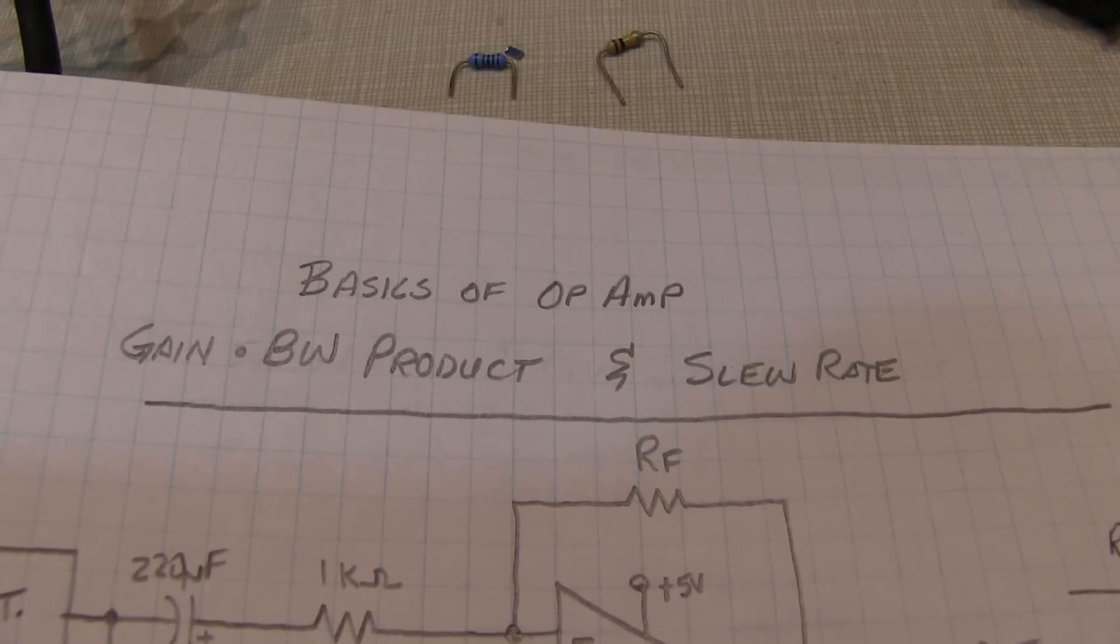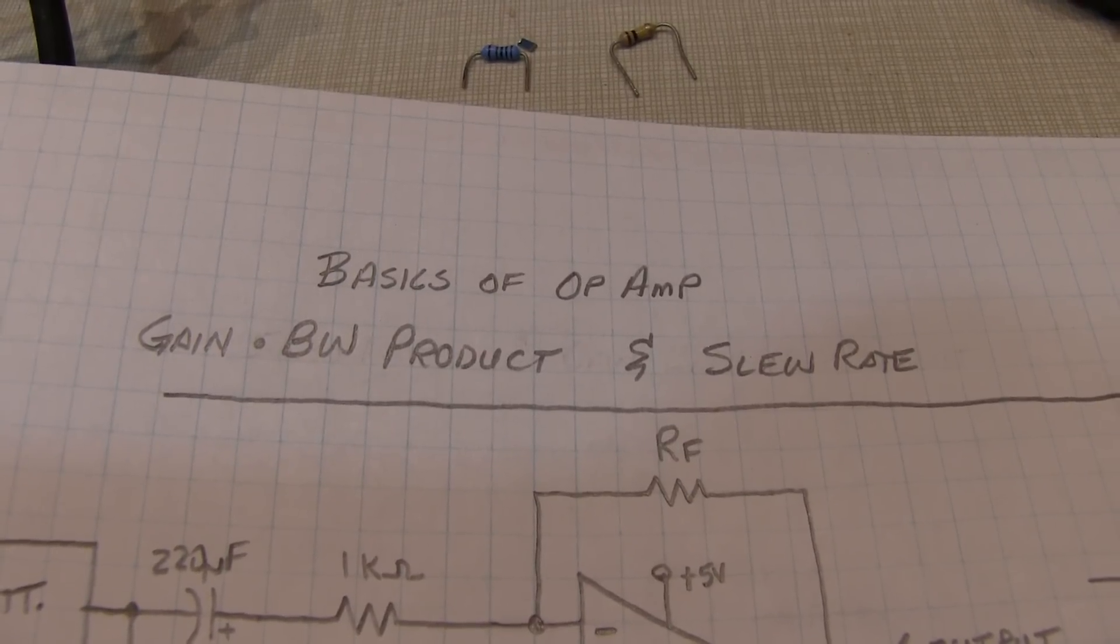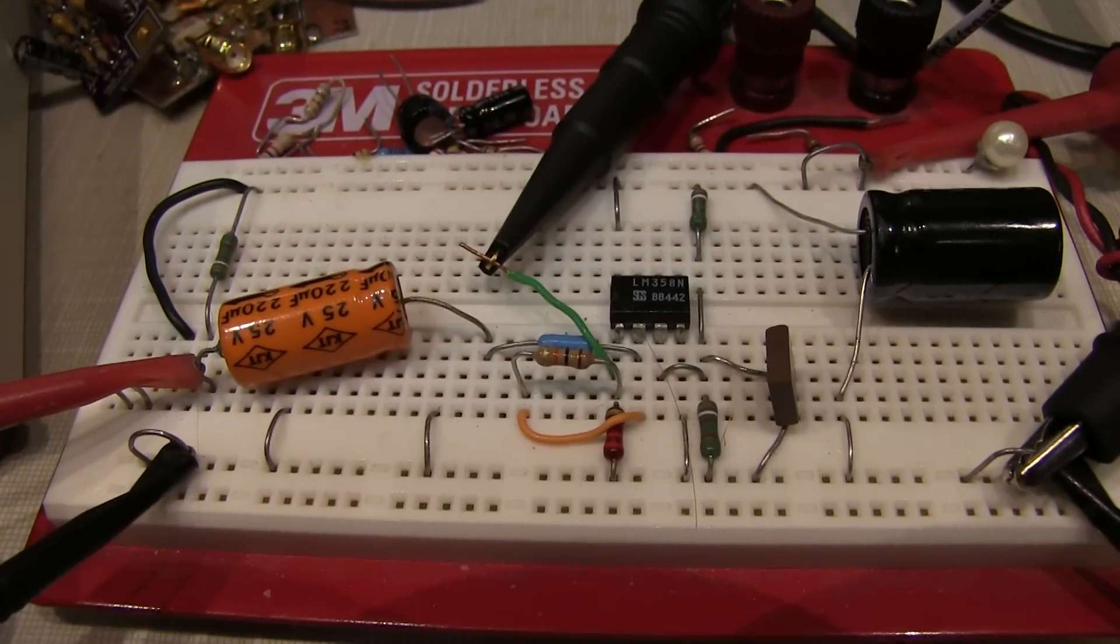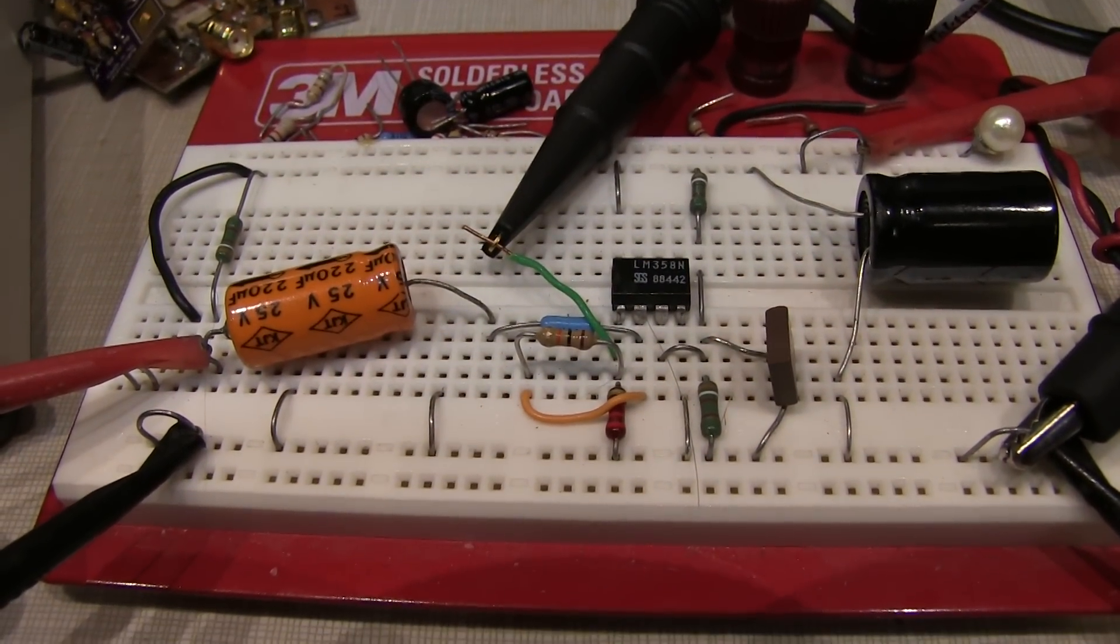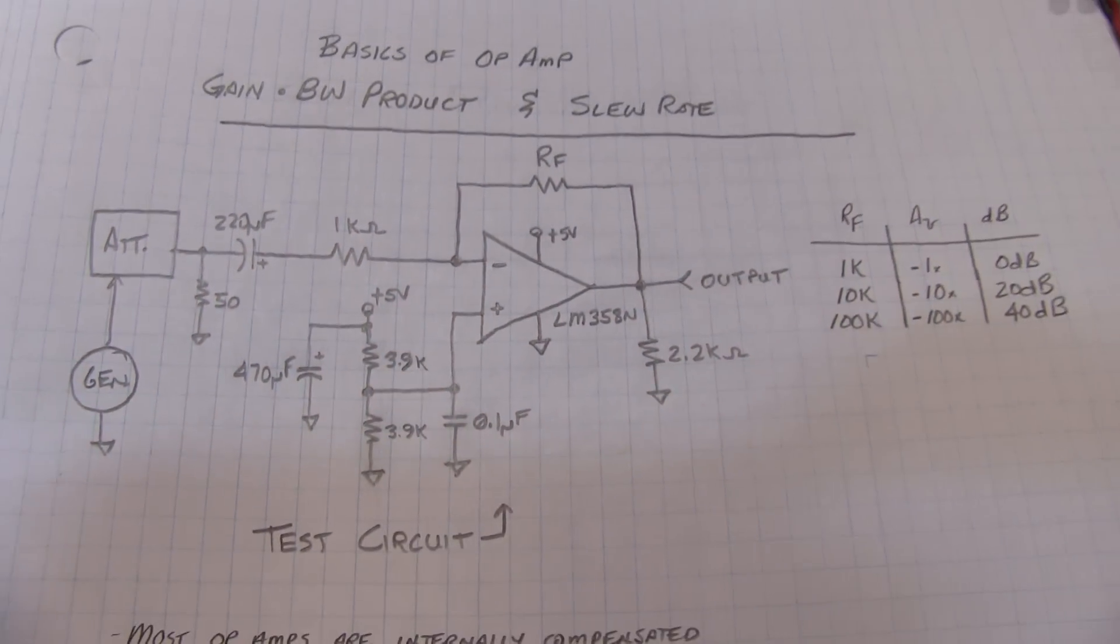In addition to describing what is meant by gain bandwidth product and slew rate, we'll also demonstrate and measure some of these characteristics using a circuit built up here on the breadboard. So let's take a look at the schematic of what we've got on the breadboard so you can do this yourself.